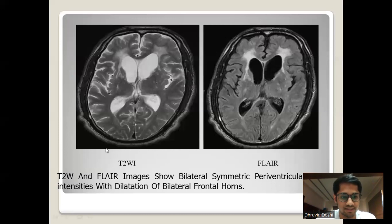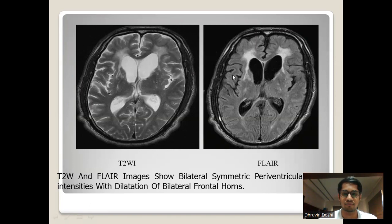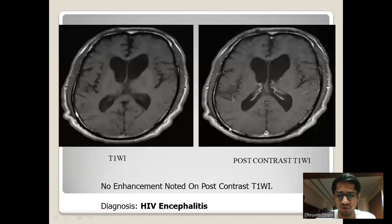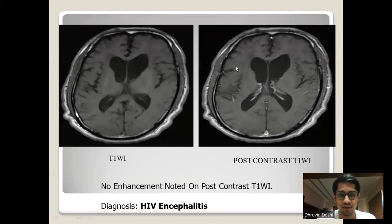On MRI, T2 and FLAIR images show bilateral symmetrical periventricular hyperintensities with some dilatation of the bilateral frontal horns of the lateral ventricles. On pre-contrast and post-contrast T1, no enhancement is noted. With the given history and MR findings, the diagnosis is HIV encephalitis.